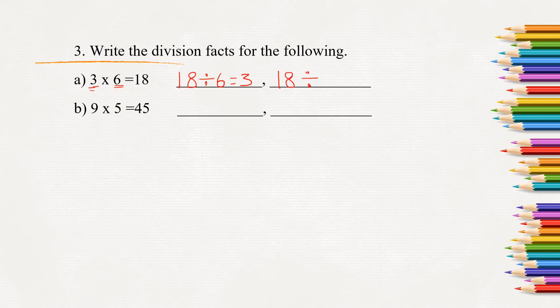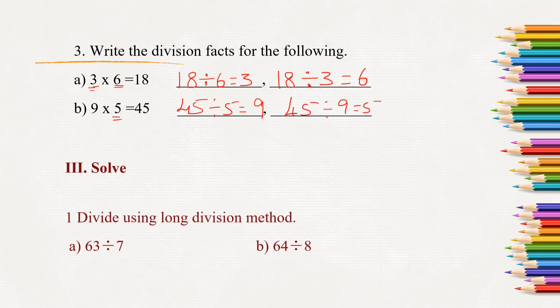One more is 18 divided by 3 equals 6. Here 9 into 5 equals 45. 45 divided by 5 equals 9 and 45 divided by 9 equals 5.